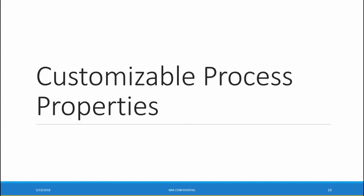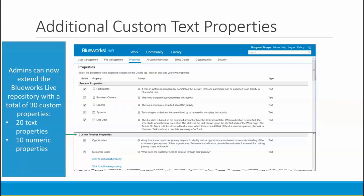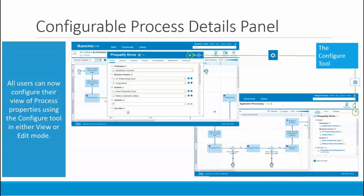Now let's look at a new feature where you can customize your view of the BlueWorks Live repository. The BlueWorks Live repository can be extended by adding custom properties. With this release, you can extend the repository with up to 30 custom process properties — 20 text and 10 numeric. To ensure your property details view doesn't become unwieldy with so many properties, we've added a new feature to let you customize your view.